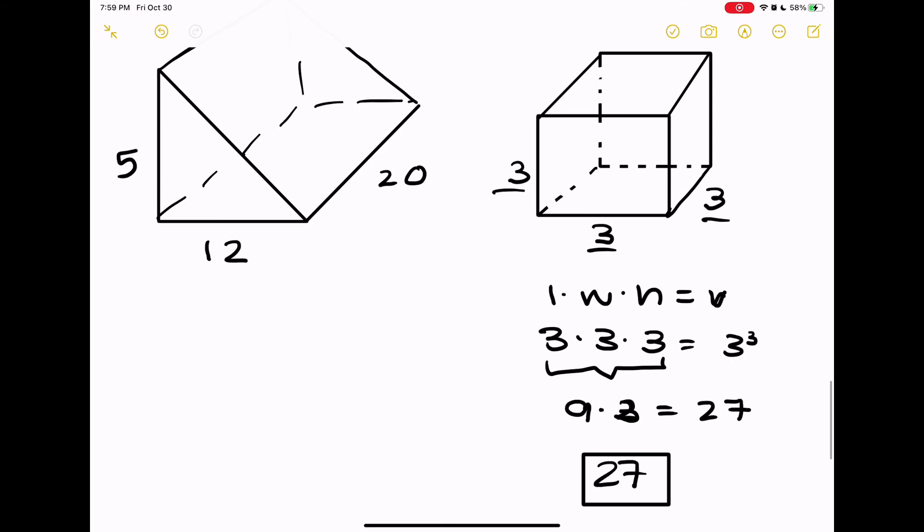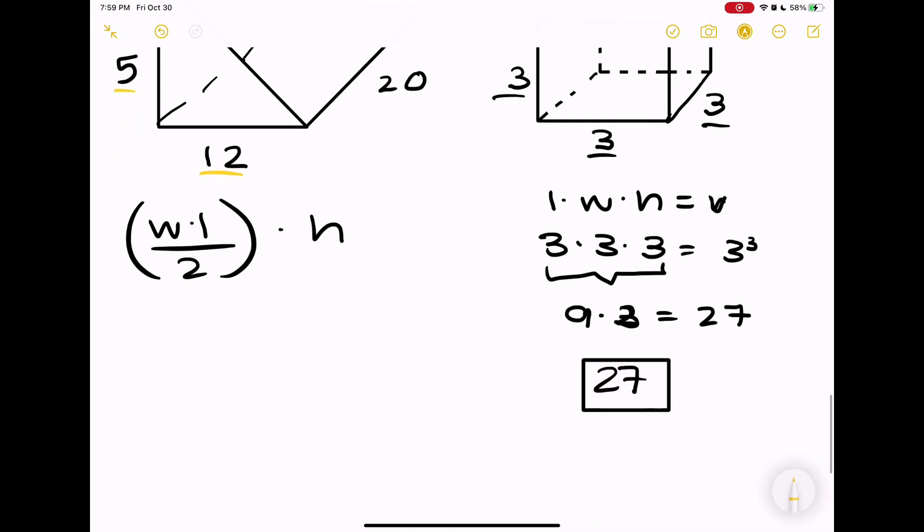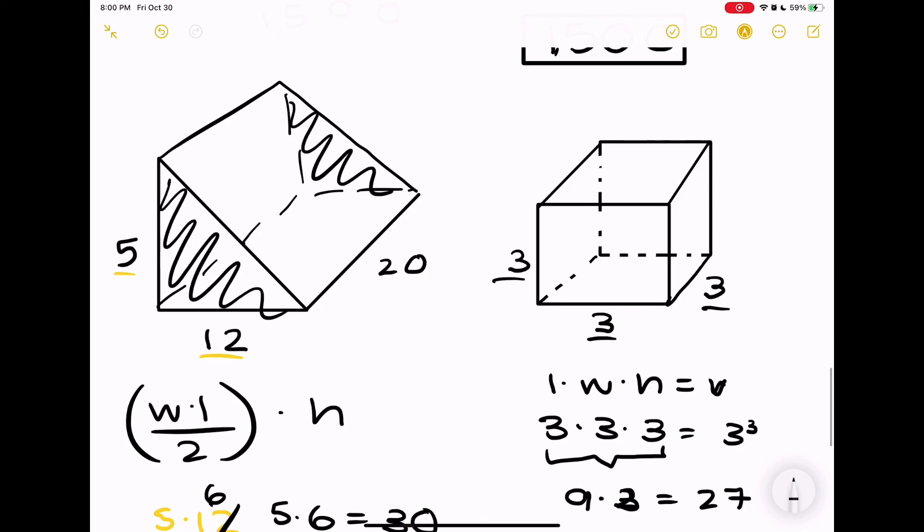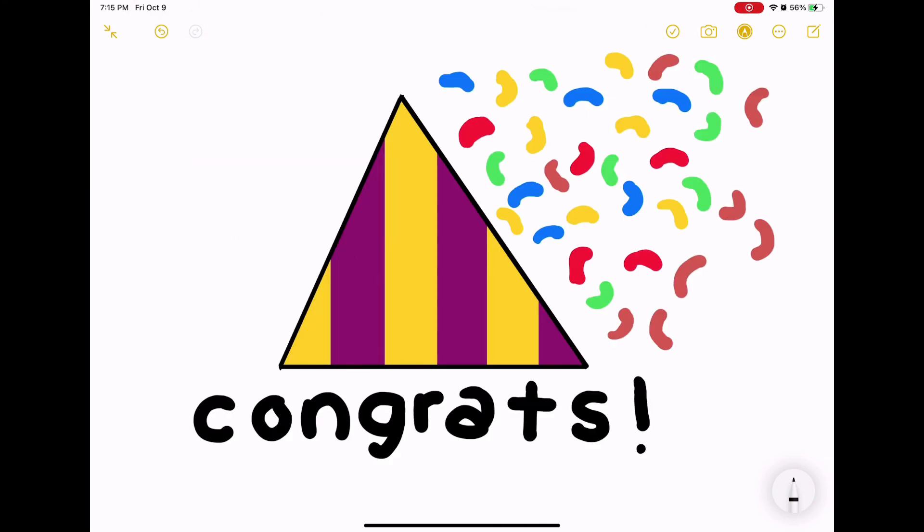Now we're going to do the triangular prism, which requires a different equation: width times length divided by 2 times height. If we plug everything in - you could have used the other one, you would still get the same answer - 5 × 12, those are the length and the width, because we know that 20 is how many units that triangle is being stretched. So you will get 30 × 20, which is the height, which is 600.